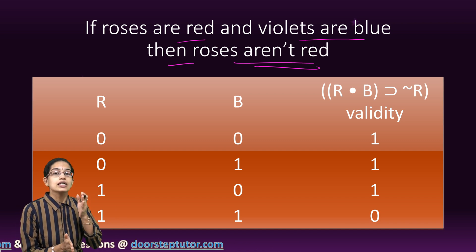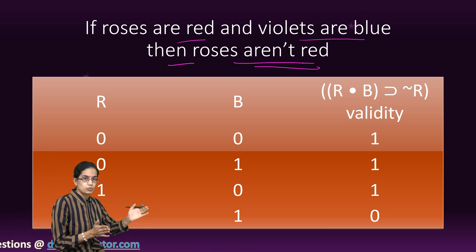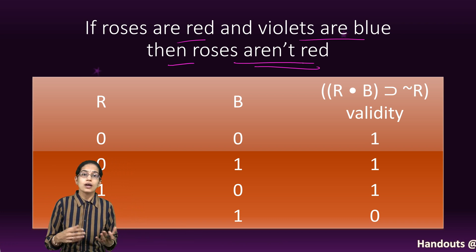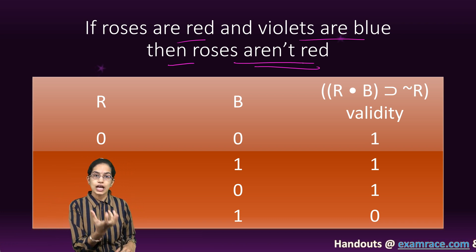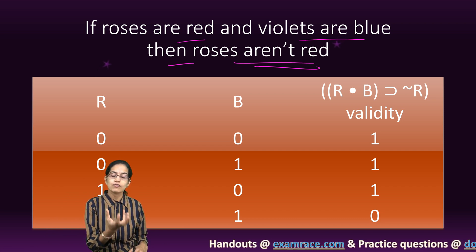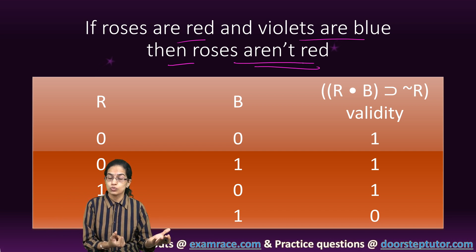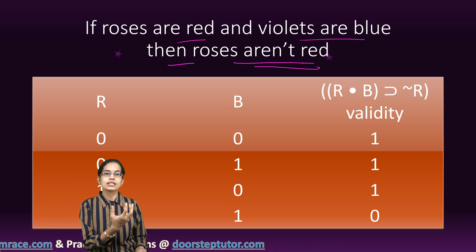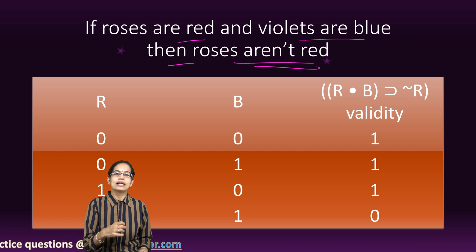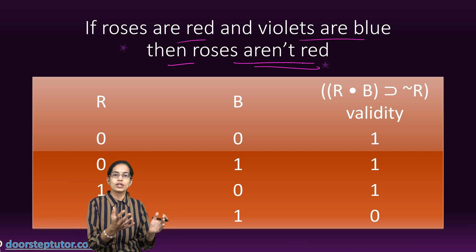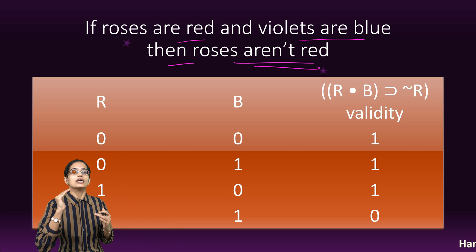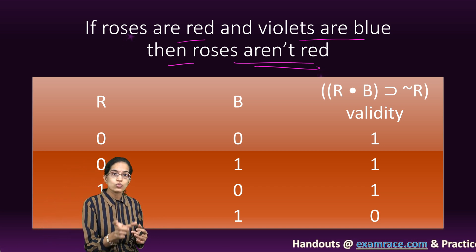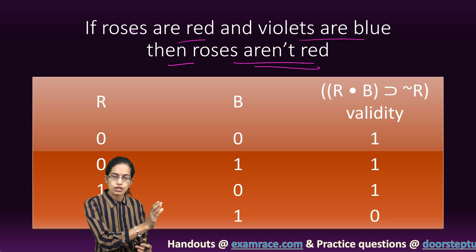Another example: 'If fire, then smoke.' This is true in most cases, but for an iron ball on fire, there is no smoke — making it false in that case. For a kitchen hearth or oven, it is true. This relates to what we studied in Hetu and Vyapti in Indian logic. The key idea is to understand contingencies, tautologies, and contradictions.